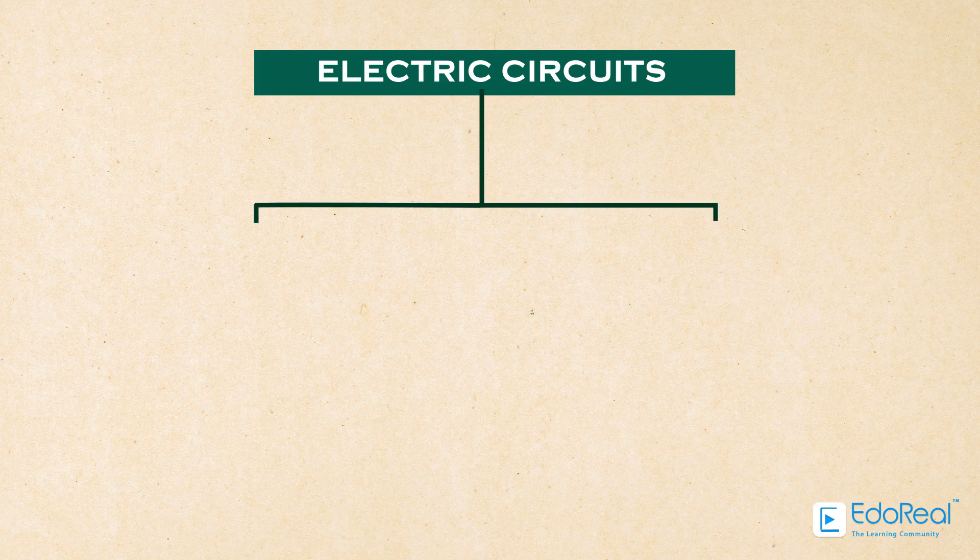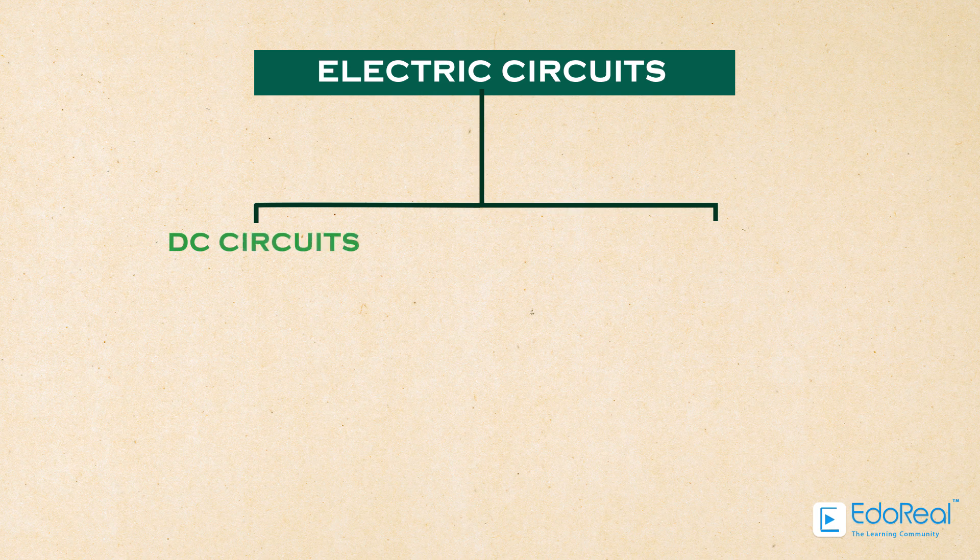There are two types of electric circuits based on the type of current they use: DC circuits and AC circuits.